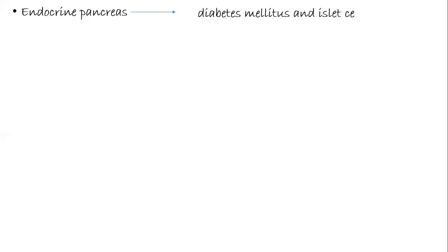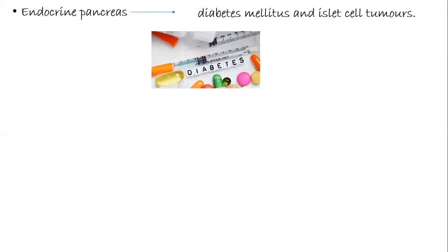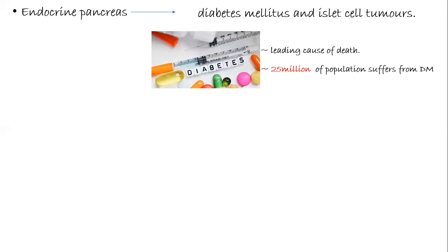The endocrine pancreas is responsible for generation of the disorder diabetes mellitus and islet cell tumors. As per the WHO, diabetes is defined as a heterogeneous metabolic disorder characterized by common features of chronic hyperglycemia with disturbance of carbohydrate, fat, and protein metabolism. It is one of the leading causes of death worldwide, with around 25 million people suffering from diabetes mellitus. The rate of increase is about 10% per year.